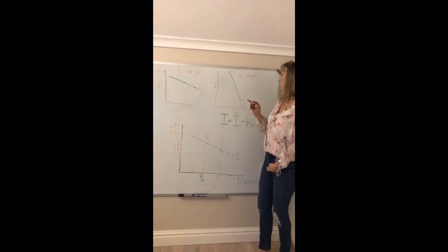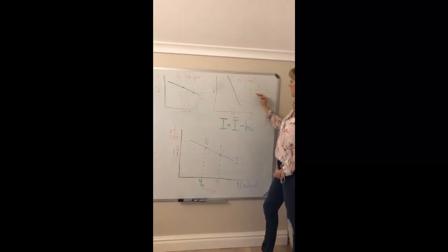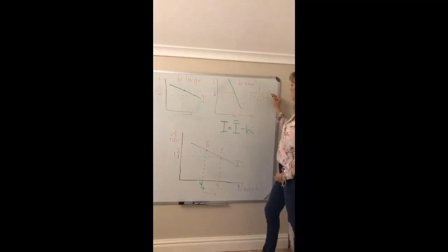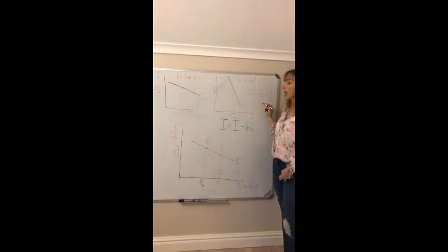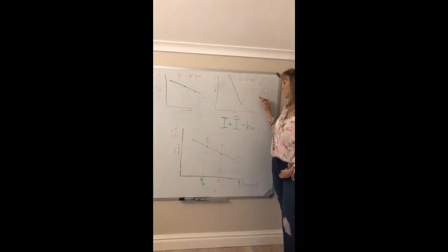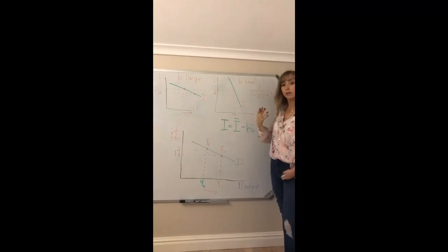Multiplier. Recall that your multiplier in the presence of government is given by that, and we know that the higher C is, the higher is the multiplier.